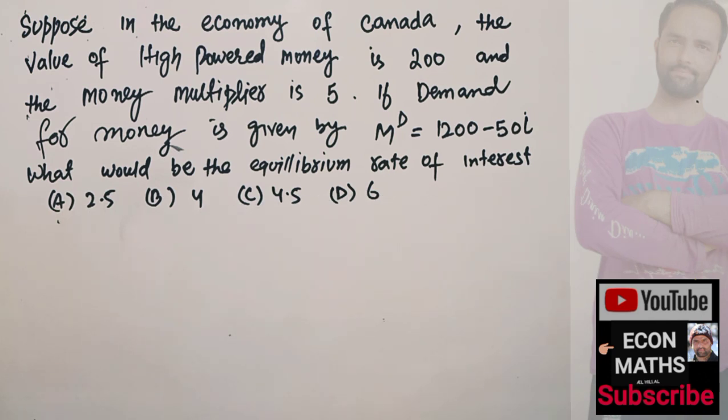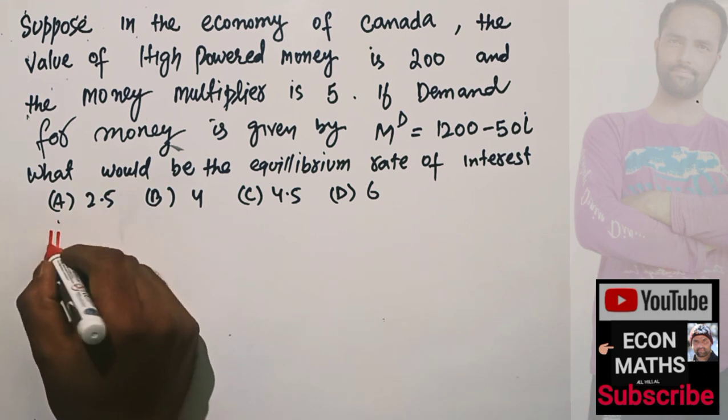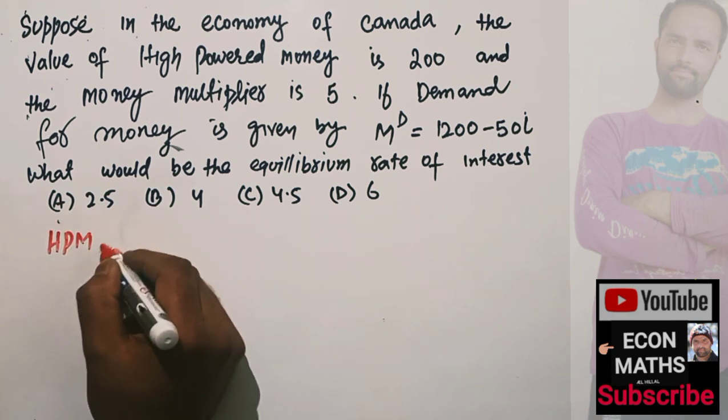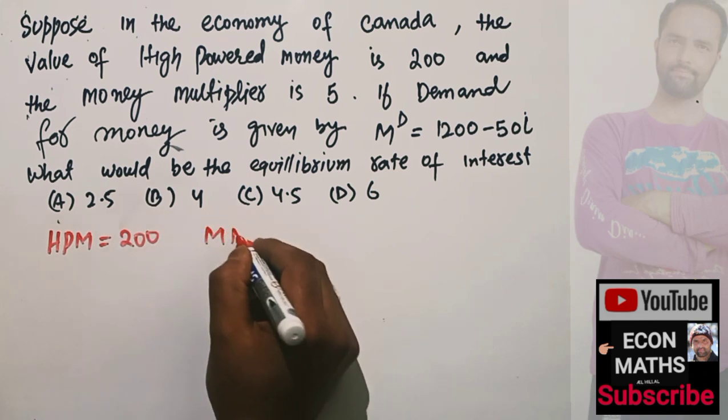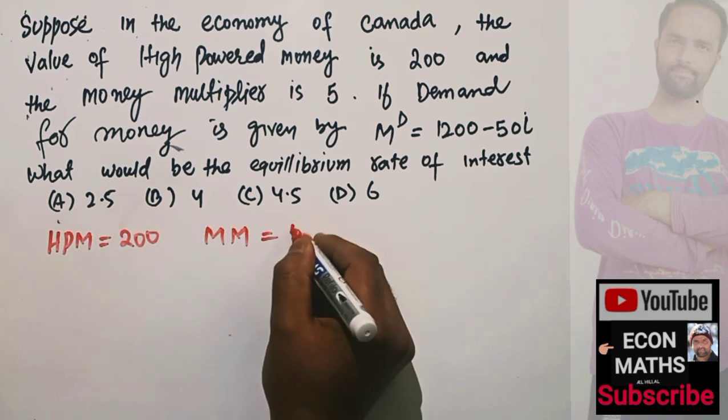What exactly are we being given? High powered money is 200 and money multiplier is 5.